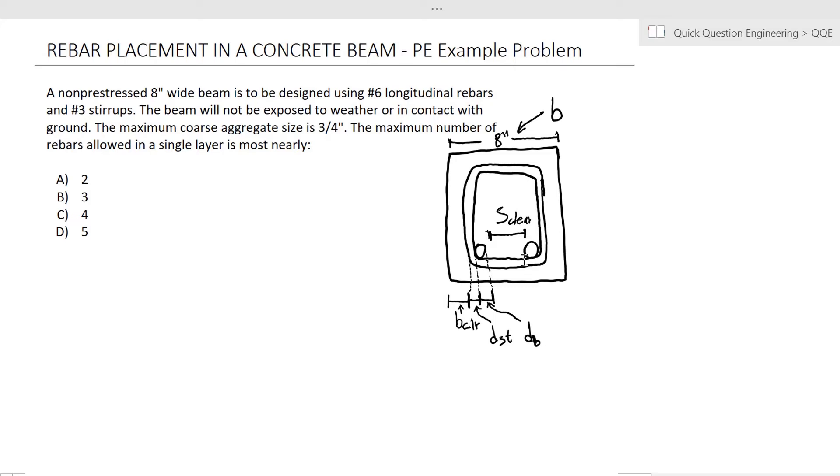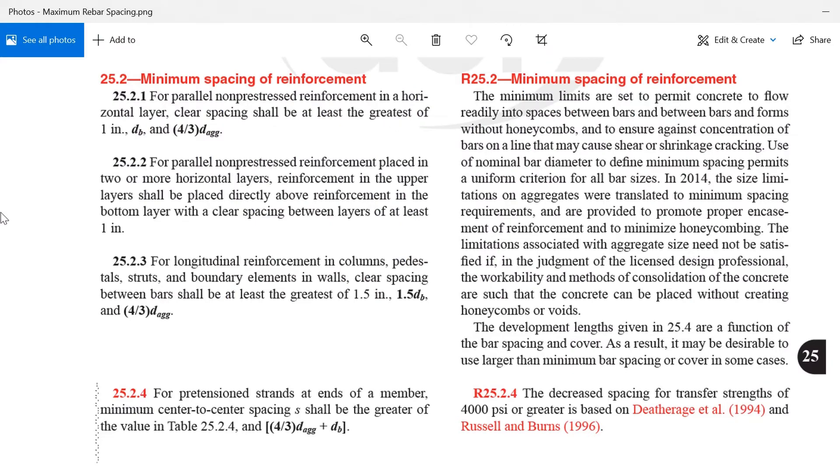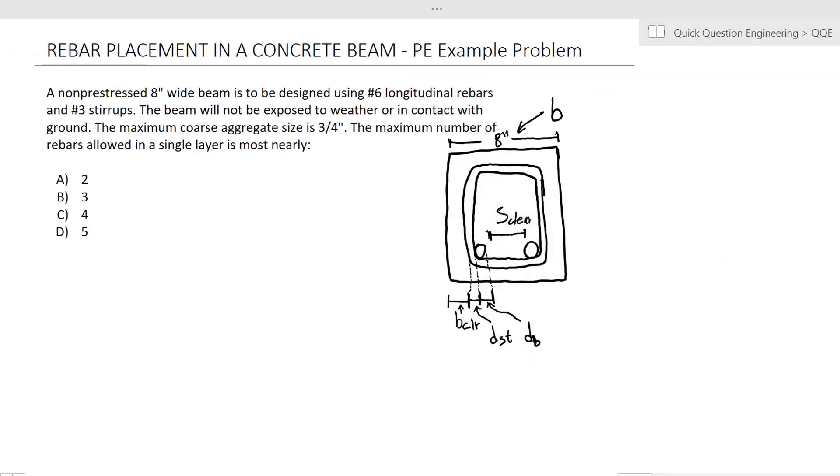There is a minimum clear spacing, and we just want to make sure that however many rebars we place are not too many that we would exceed the minimum spacing. From ACI 318-14, in this section here, we know that the clear spacing shall be at least the maximum of these three items: one inch, diameter of the rebar, and 4/3 the nominal diameter of the aggregate. So if we translate that into a formula...